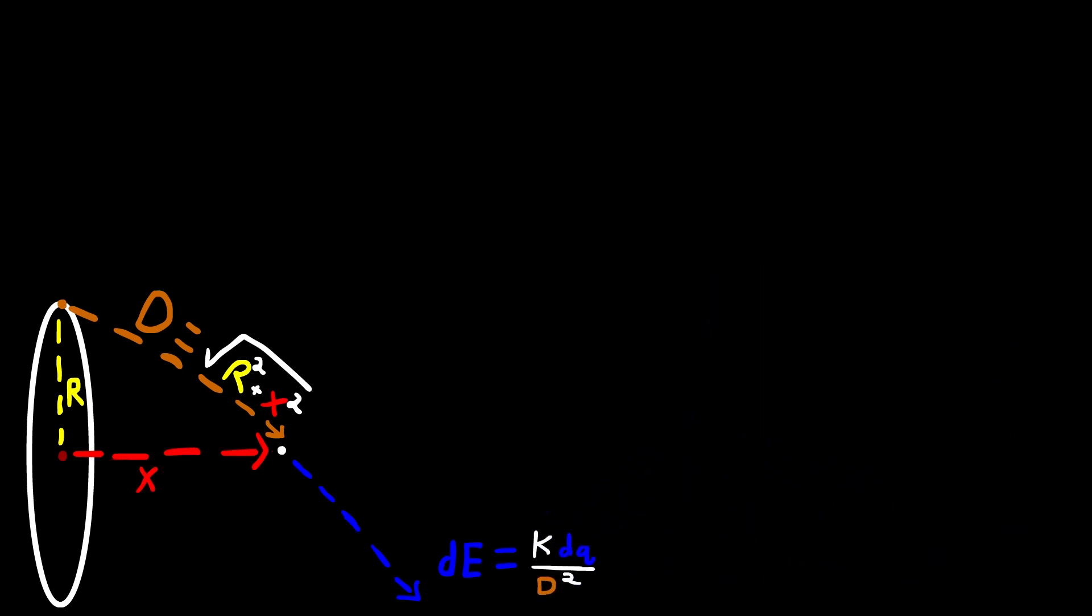Now, you need the cosine of theta in order to get the derivative of energy in the x direction, which is equivalent to the adjacent over hypotenuse, or x over d.